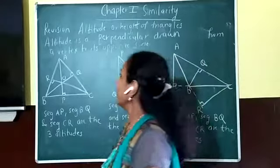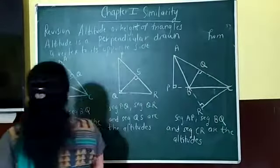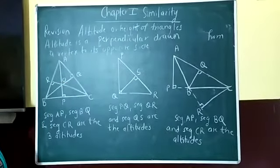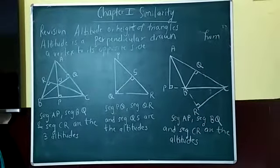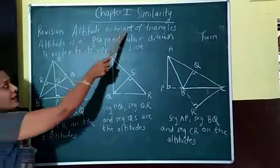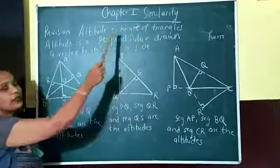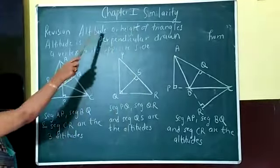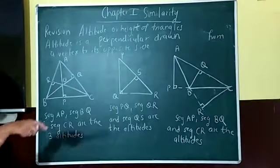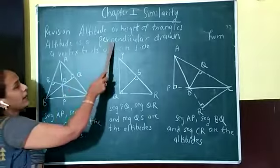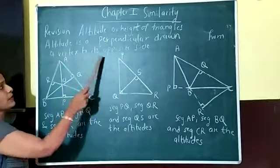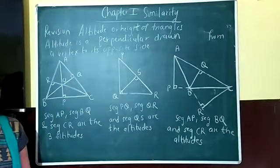We are going to revise what is an altitude. Already you have learnt in your previous standards what is an altitude. Altitude is another word for height. Altitude is defined as a perpendicular drawn from a vertex to its opposite side.